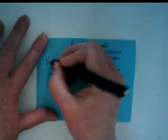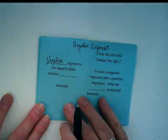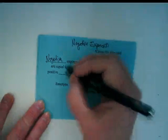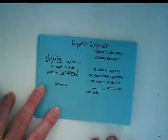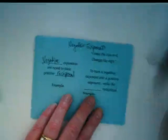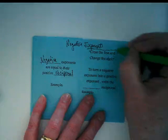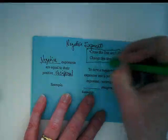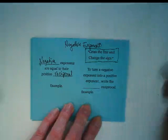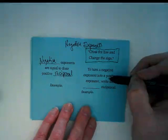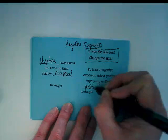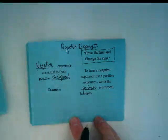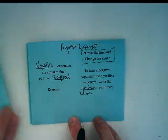The first blank is negative because I want this phrase to read negative exponents are equal to their positive reciprocal. There is a phrase that is used to remember this rule. Cross the line and change the sign. So to turn a negative exponent into a positive exponent, write the positive reciprocal. And we are going to do two really quick examples down here.